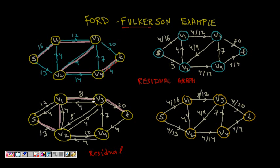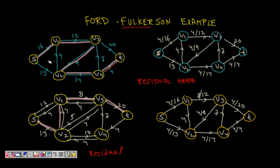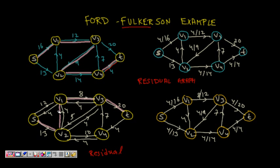From the residual graph, we look for another path from source S to sink T. The next path found is S→V2→V1→V3→T. We check this is a new path not repeated from before.